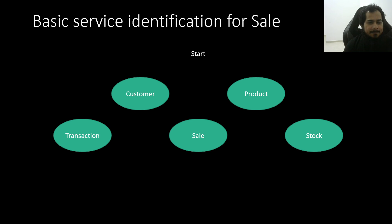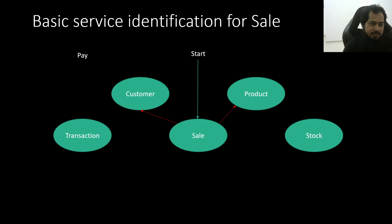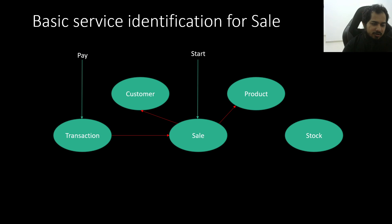So what we have here: we have sell, we have customer, we have product, we have stock, and we have transaction. When we start the operation, we have customer, we have sell — so we have an event or notification. When the customer is connected, for a sale the state changes: it starts as pending, then if it's an online sale it gets approved, then on the way for delivery, then delivered, then complete. If it's an in-house sale, it goes straight to complete. In both cases, the stock changes.